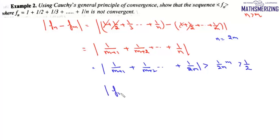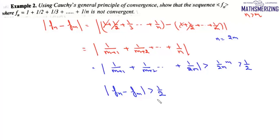So |fn minus fm| is greater than 1/2. This contradicts the condition of Cauchy's criteria. Therefore, the sequence is not a Cauchy sequence and hence not convergent.